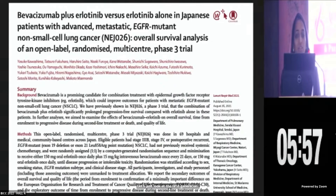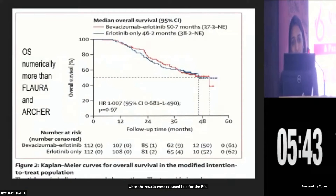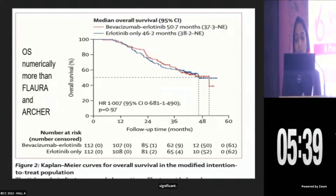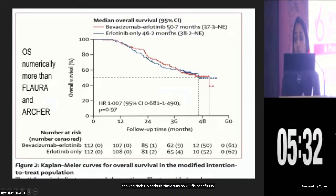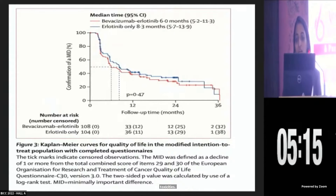Let's look at the first-generation EGFR TKI combinations. This is the NEJ-026 trial, conducted in Japan across about 50 hospitals. In 2019, the results showed a PFS benefit that was statistically significant. But last year in 2021, their OS analysis showed no OS benefit — though the OS was numerically superior to what we saw in even the FLORA and ARCHER trials, at almost 15 months. Adding a drug obviously brings more toxicities, but this trial showed that quality of life decline was comparable between the bevacizumab-erlotinib and the erlotinib-alone arms.